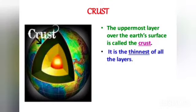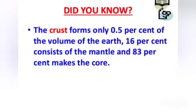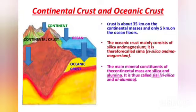The uppermost layer over the earth's surface is called the crust. It is the thinnest of all the layers. The crust forms only 0.5% of the volume of the earth. 16% consists of the mantle and 83% makes the core. So maximum volume goes to the core.